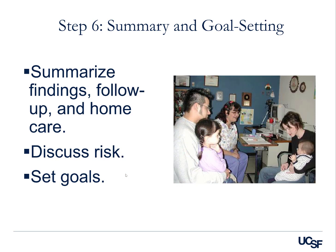Step six is summary and goal setting. Summarize the findings, follow-up, and home care. Once you summarize, establish whether the child is high, moderate, or low risk for caries development, then establish a follow-up schedule. For extreme high risk, they come back every three to four months. For moderate risk, they come back every six months. For low risk, you may bring them back every 12 to 18 months. Emphasize the importance of oral hygiene at home and dietary recommendations — toothbrushing, flossing, and reducing the frequency and duration of fermentable carbohydrate challenges.